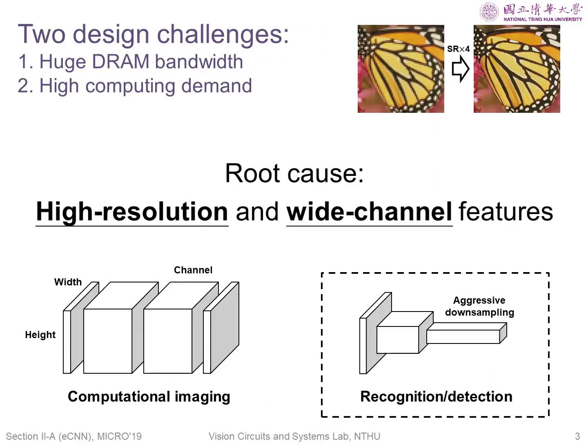However, computational imaging networks have high-resolution and wide-channel features, and thus bring two design challenges: huge DRAM bandwidth and high computing demand.